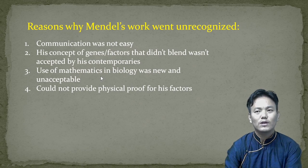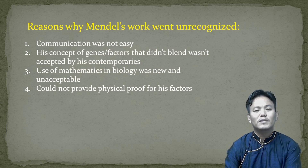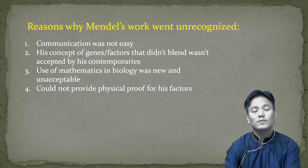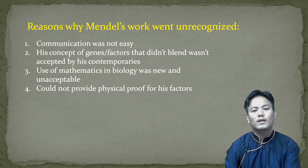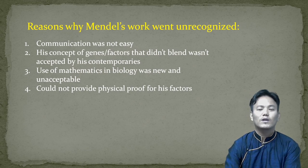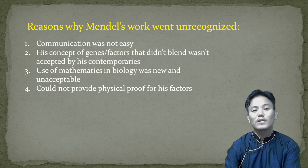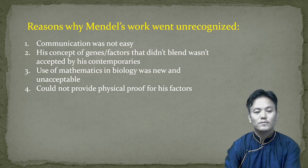One extra reason why Mendel remained unpopular was that during his time, Charles Darwin was gaining popularity. Everyone was mesmerised by Charles Darwin's work and his theories of evolution. So Mendel and his research on pea plants went unrecognized when he was alive.